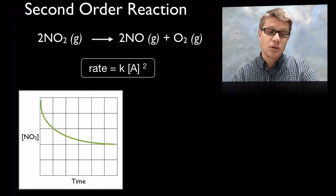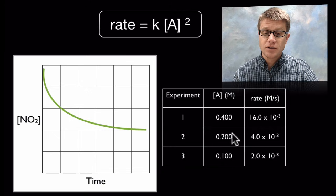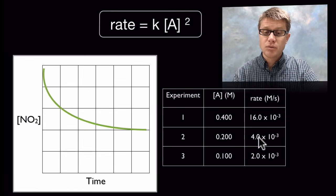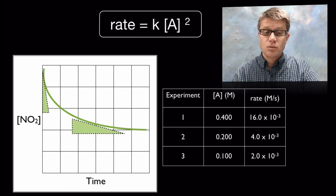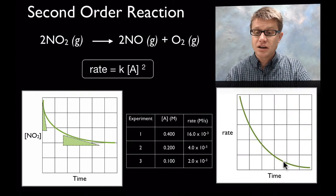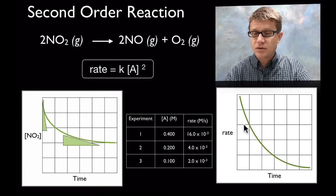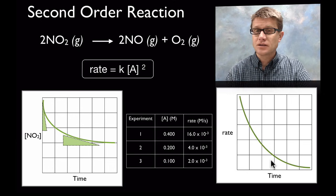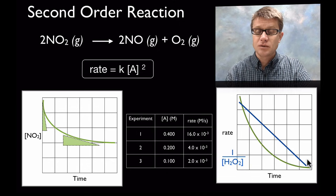A second order reaction goes even faster — rate equals k times [A]^2. Looking at the data, from point 1 to point 2 it may look like it's doubling, but we're actually squaring: 2 squared is 4, 4 squared is 16. Doubling the concentration from point 2 to point 4 squares the rate. Graphing this produces a curved rate line — to avoid heavy calculus, we take the inverse of the concentration over time, which gives a straight line related to k.